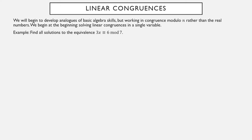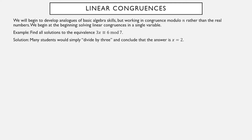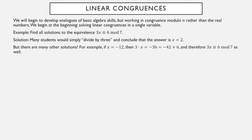Specifically, let's try to find solutions to 3x ≡ 6 modulo 7. Many people would simply divide by 3 and say the answer is 2, but there are other solutions. For example, if x is negative 12, then 3x is negative 36, which is in fact 6 larger than a multiple of 7. So 3x ≡ 6 mod 7 when x is negative 12. 2 is a solution, but it's not the only solution.